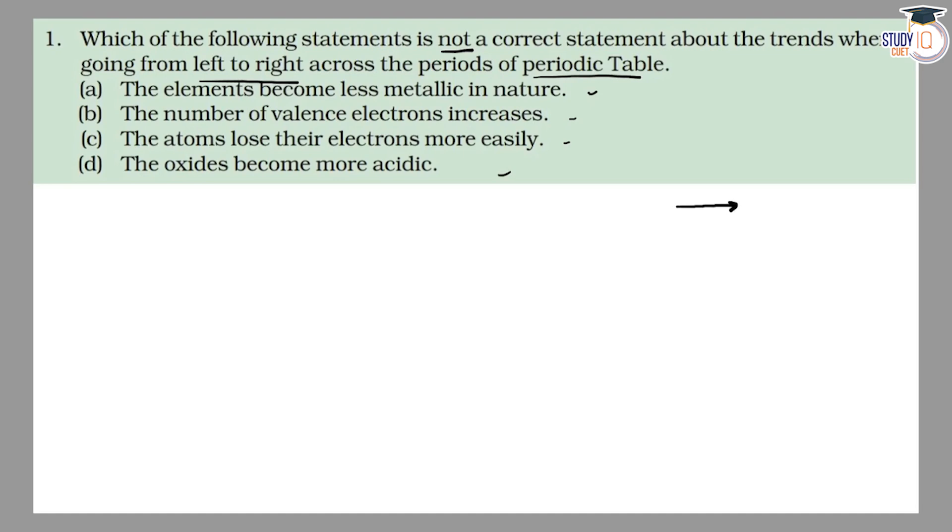Option A: The elements become less metallic in nature. This is true. Left-hand side has metals and right-hand side has non-metals, so this is true.